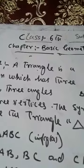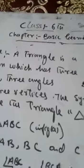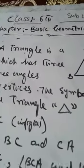A polygon with three sides is called a triangle. A triangle has three angles and three vertices.